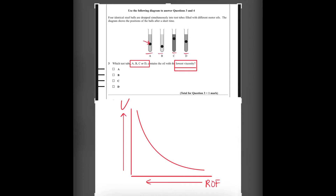The lowest viscosity means a higher rate of flow. Since there is a higher rate of flow, the oil flows more. So if we drop the balls from the same height, the ball in the oil with the lowest viscosity would travel the most. Part B has traveled the most, so the answer to this question is B.